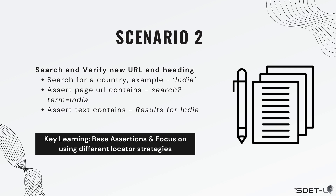It's time for scenario two. We're going to do a basic search flow — search for a country, for example India, then assert that the page URL contains that text as well as the search term. The key learning here is how to do basic assertions for URL and text, and also how to use different locator strategies in Playwright when finding elements as part of this search flow.